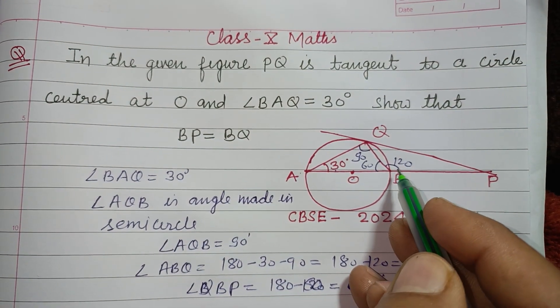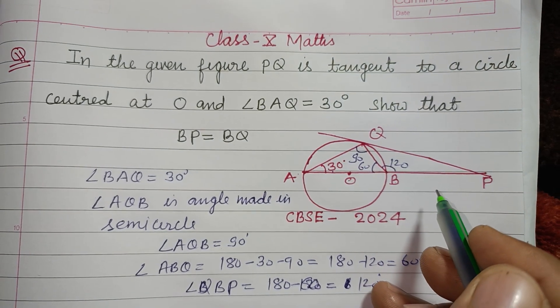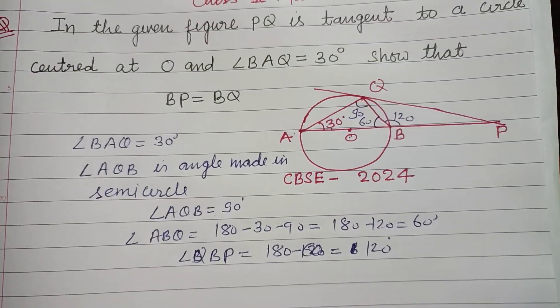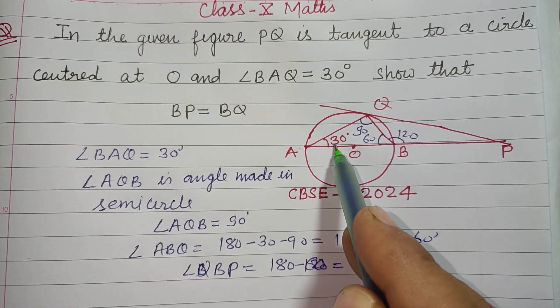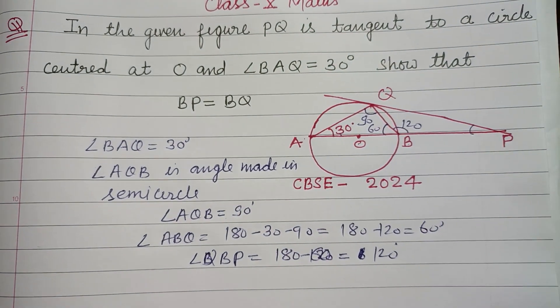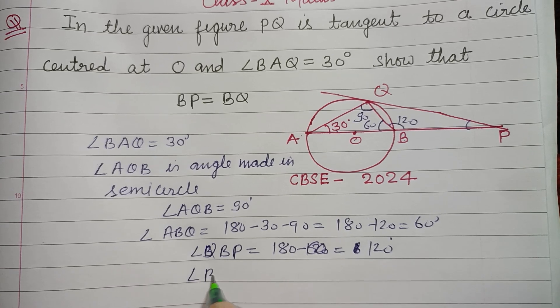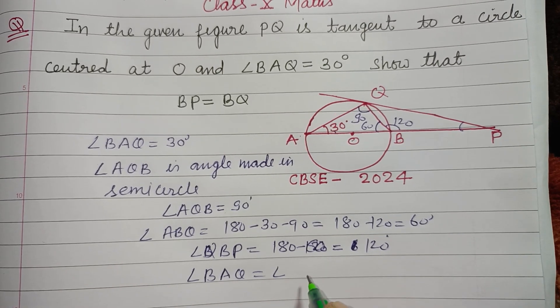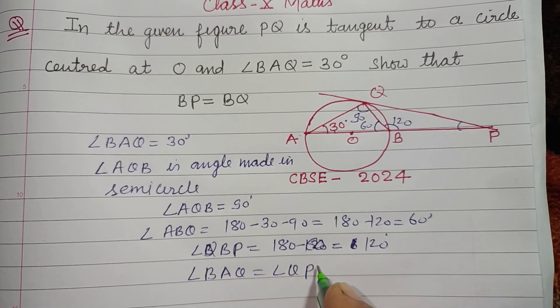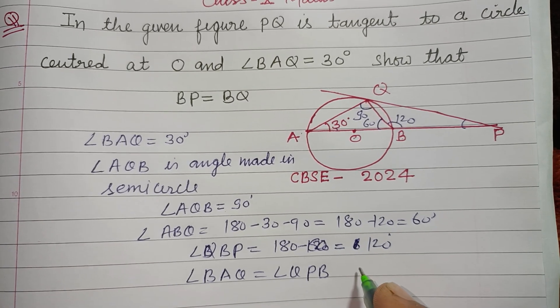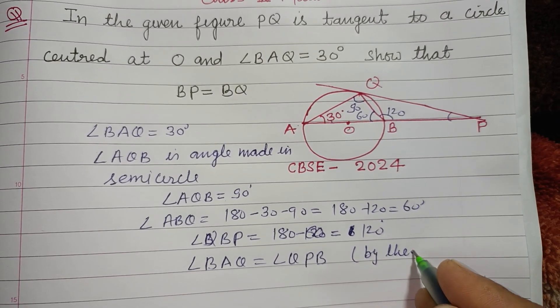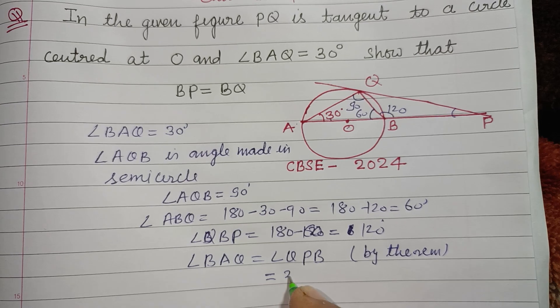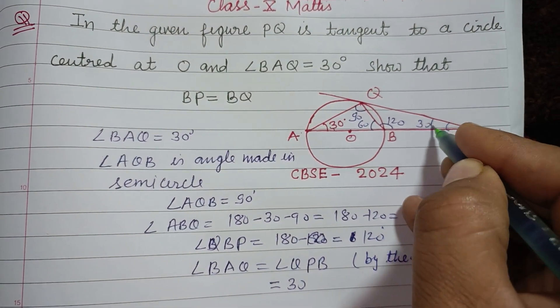If this is 120, then by theorem we know that angle BAQ equals angle QPB. If you know the tangent theorem, then this will be 30 degrees. So this is 30 and this is 30.